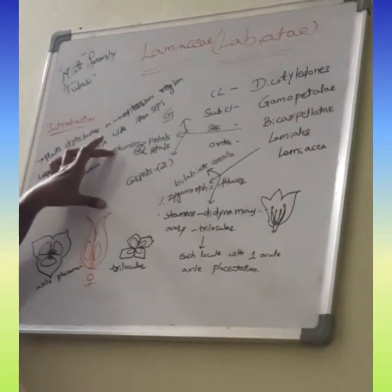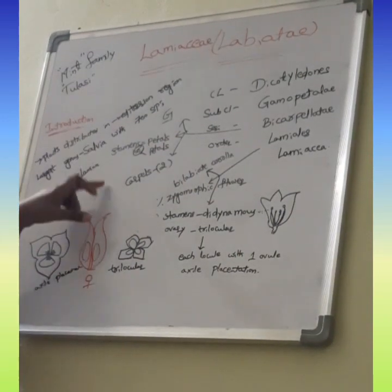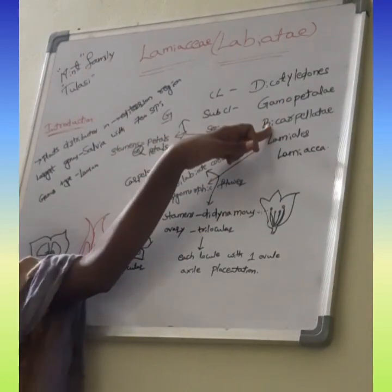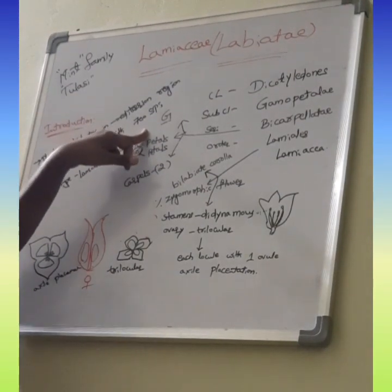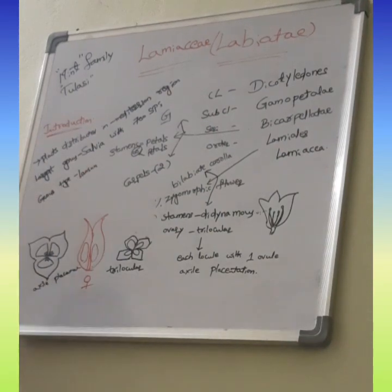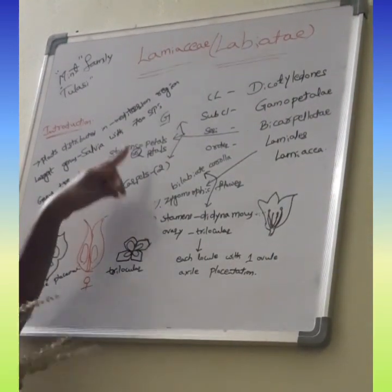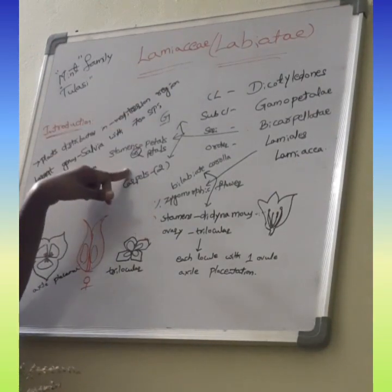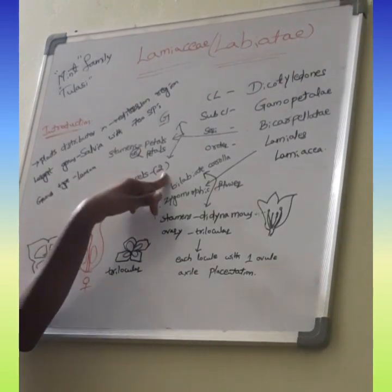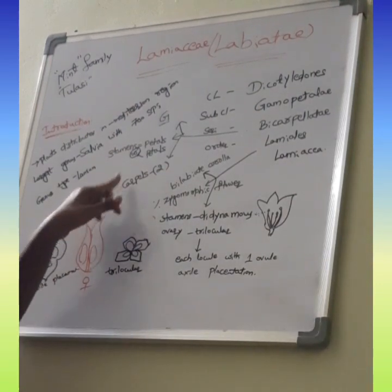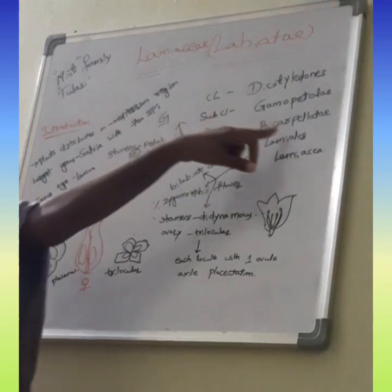Some points are included in why it is kept in the BICARPELLATAE series. Three reasons: first, HYPOGYNOUS FLOWERS. Due to the presence of HYPOGYNOUS FLOWERS, then STAMENS NUMBER is equal to the PETALS NUMBER, or STAMENS NUMBER is less than the PETALS NUMBER. Along with these two reasons, another reason is CARPELS. CARPELS NUMBER is 2. Two CARPELS NUMBER is present, those CARPELS are FUSED. Due to these three reasons, it is kept in BICARPELLATAE.